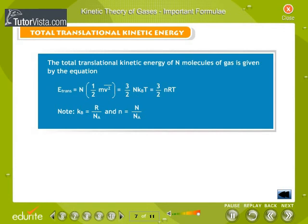Note: here we have considered Boltzmann constant KB to be equal to R by NA, and the number of molecules N to be equal to n by NA.